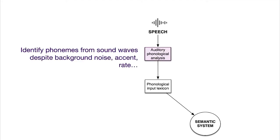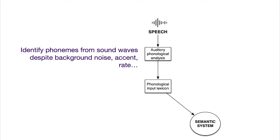It identifies phonemes from sound waves despite background noise, accent, or rate. Different accents mean that people say particular vowels very differently, but this process will determine that a person was trying to say an 'e' or an 's' despite differences between people. Also not pictured in this model is a phonological input buffer — essentially auditory working memory — which holds onto that sound after it's been produced to allow analysis to occur. That's considered somewhat more of a cognitive process, though there's a heap of overlap.